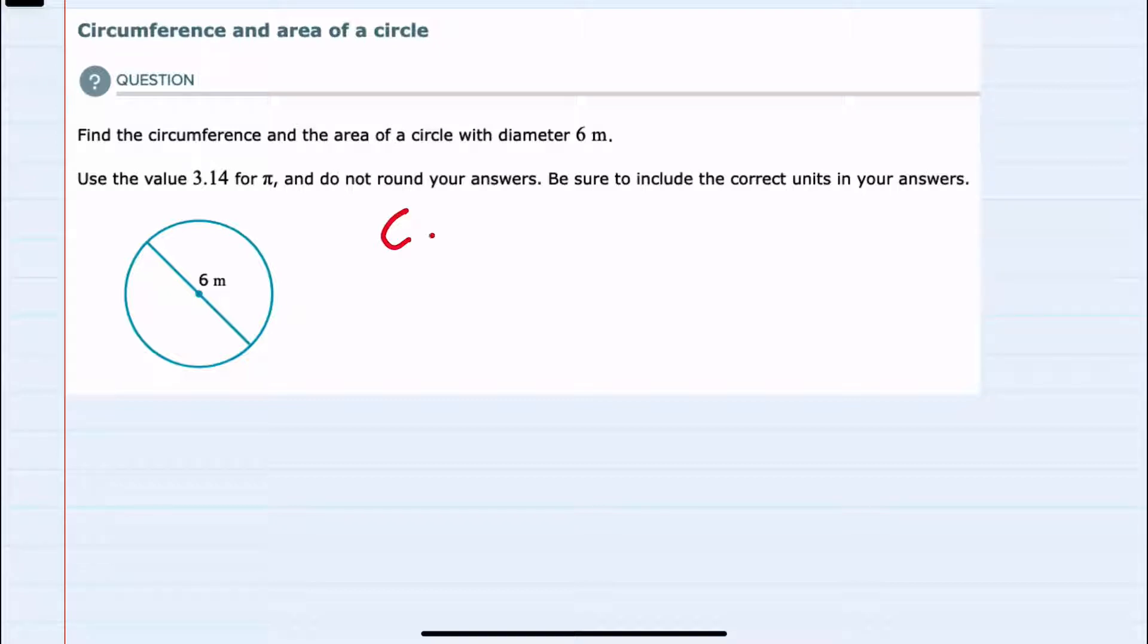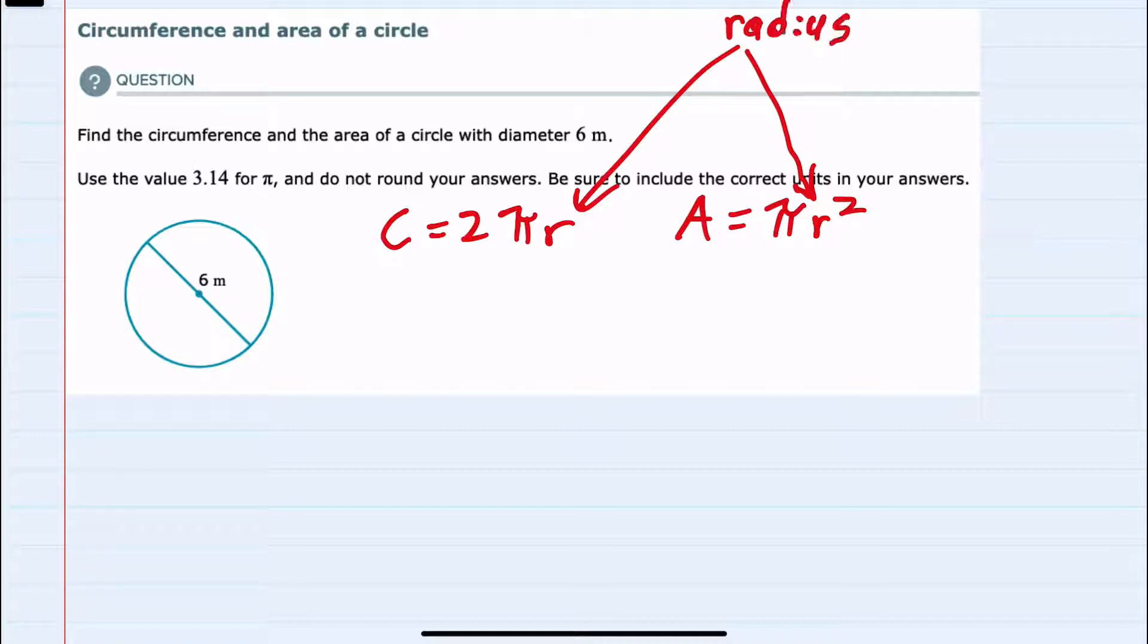First, the circumference of a circle is 2πr, and then the area of a circle is πr². And we notice that in both of these, the only value to plug in is r, which is the radius.